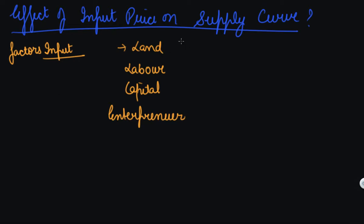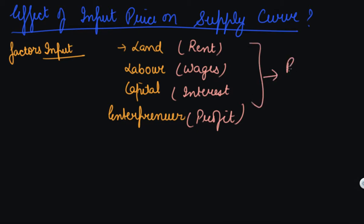To land you pay rent, to labour you pay wages, to capital you pay interest and to entrepreneur you give profit. See if your price of input increases,